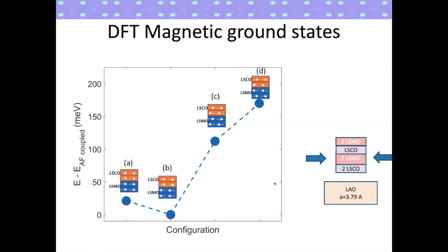For four unit cells of LSMO, we find a very weak metal-to-insulator transition at low temperatures. In the 2-unit-cell case we see a kink in the resistivity, but the resistance still goes up. We're not sure if it's due to reduced dimensionality reducing the bandwidth and keeping charge localized, or if it's due to something like charge ordering coming into play. DFT currently doesn't give any indication of a metal-insulating ground state — it still predicts a metal — so we'll need to do DFT+DMFT to tease out the true transport electronic ground state.